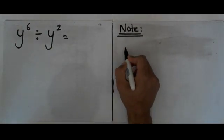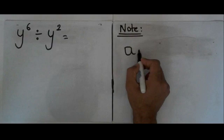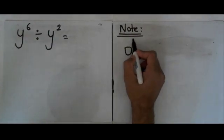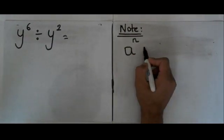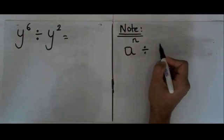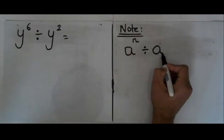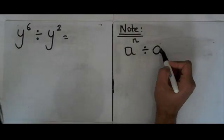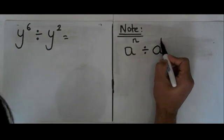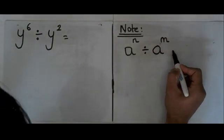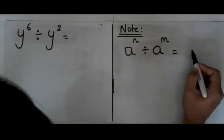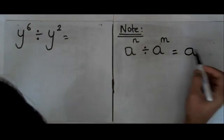If you have a base which is a, and we have a power of n, and we want to divide that with another number which has a base of a, in this case the power is m, then all we need to do is write the base just once.